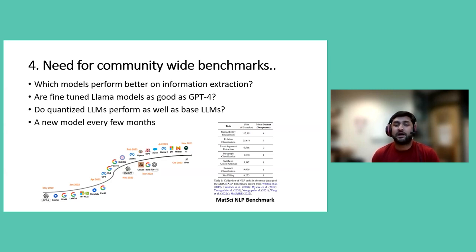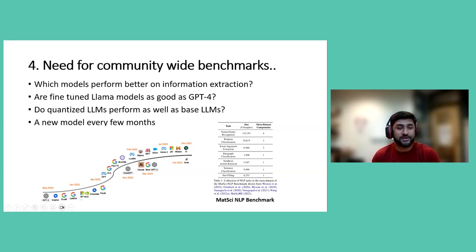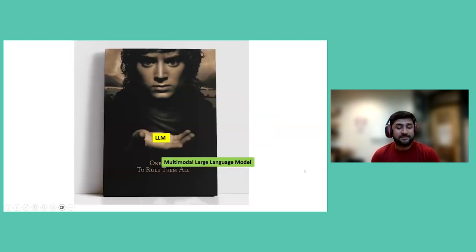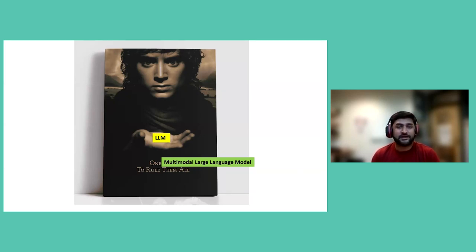This leads to point four: we need community-wide benchmarks. We don't have clear data on what is state-of-the-art for materials science related tasks with LLMs. We don't know if a particular open-source language model is as good as GPT-3 or GPT-4, whether domain-specific training outperforms a base model, or what the trade-off is between a quantized LLM and a base model. With a new model coming out every couple of months, a community-wide benchmark with LLM-specific tasks would be very helpful. Finally, perhaps it's time for one multi-model large language model to serve us all — a community effort to generate one large language model applicable and useful for all of us.